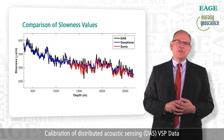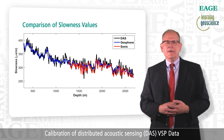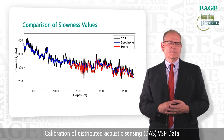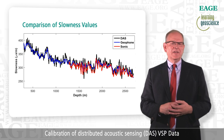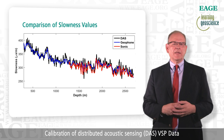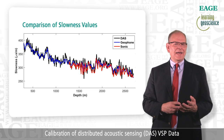Next, we compare slowness values from DAS, geophone, and sonic datasets. The red curve shows the sonic log, which has been upscaled to a 15.4 meter interval. The blue curve shows the derived slowness values from the geophone data. The geophone slownesses are slightly larger, but show the same trends as the sonic log. And the black curve shows the slowness derived from the DAS dataset. We see it matches both sonic and geophone data extremely well.